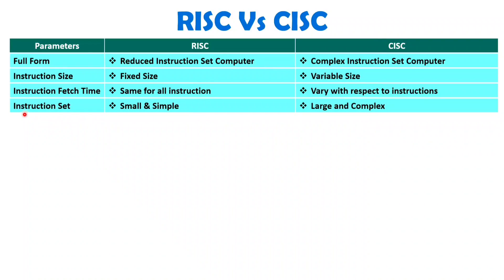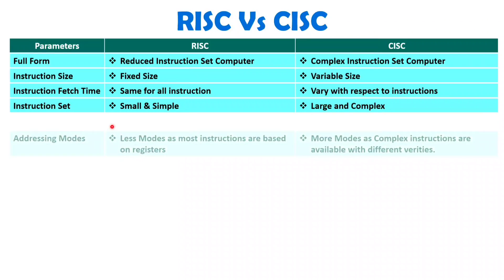When we talk about the instruction set, it will be small and simple for RISC, but with CISC it will be large and complex — varieties of instructions are available. There will be more memory-type instructions available with CISC. With RISC, the instruction set is purely based on registers only. RISC is based on load and store, while CISC is not based on load and store, so varieties of complex memory instructions are available with CISC.